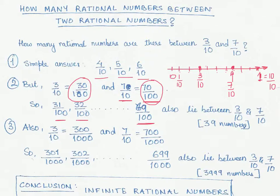So we can say that all these numbers—that is 39 additional numbers in the form of p by q, 31 by 100, 32 by 100, all the way up to 69 by 100—they also lie between 3 by 10 and 7 by 10.